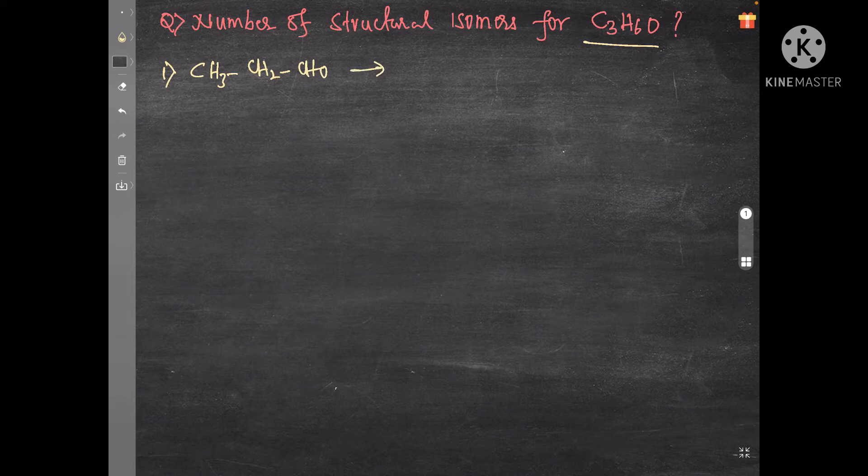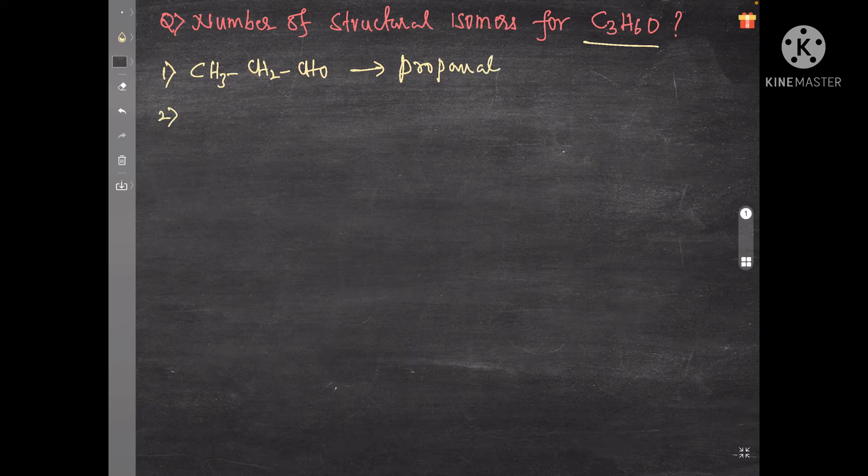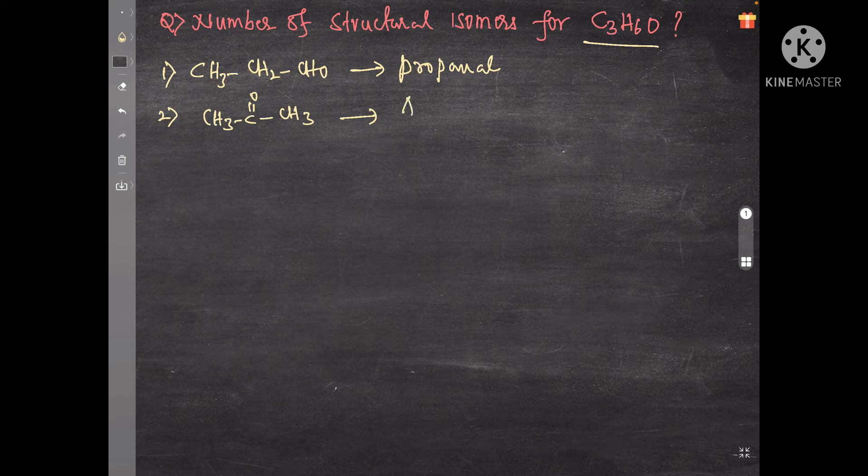The name of this compound is propanal. Second one is CH3COCH3, which is a ketone, name of the compound